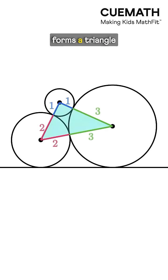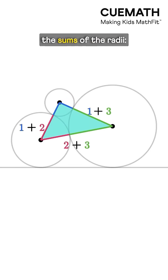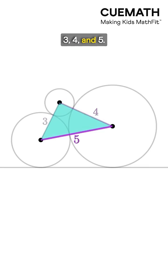Joining their centers forms a triangle with sides equal to the sums of the radii. 3, 4, and 5.